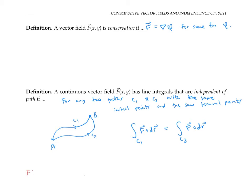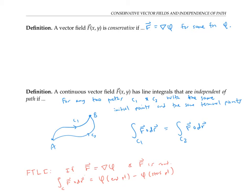We've seen before that the fundamental theorem of line integrals says that if you have a vector field that's conservative and continuous, then the integral over any curve of F·dr is just phi evaluated at the terminal point minus phi evaluated at the start point. Therefore, the line integral's value only depends on phi's value at the start and endpoint and won't depend on the path taken. So if F is a continuous conservative vector field, its line integrals will be independent of path.